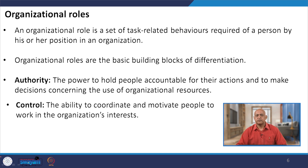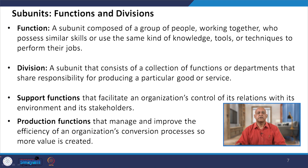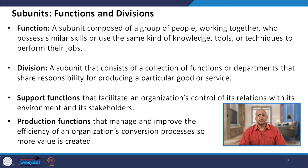Differentiation involves authority and control mechanisms. Authority is the power to hold people accountable for their actions and to make decisions concerning the use of organizational resources. Control is the ability to coordinate and motivate people to work in the organization's interests. Subunits — functions — are composed of a group of people with similar skills or knowledge. A division is a subunit consisting of a collection of functions or departments sharing responsibility for producing a particular good or service.